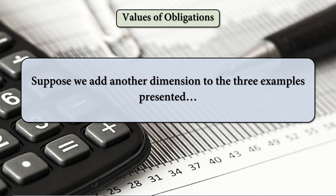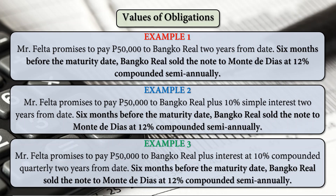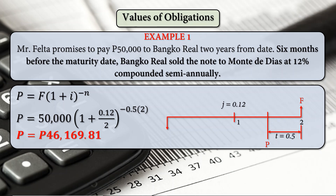Now suppose we add another dimension to the three examples: 6 months before the maturity date, Banco Real sold the note to Monte de Diaz at 12% compounded semi-annually. Using the compound interest formula to find P, we solve the value 6 months before the maturity date of 2 years — that is, how much Banco Real would sell the note to Monte de Diaz using 12% compounded semi-annually.